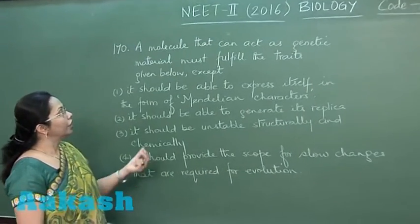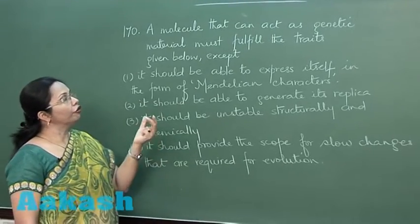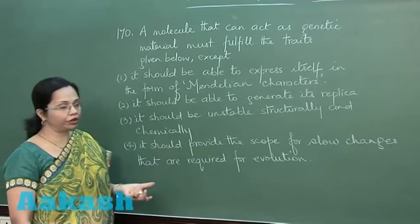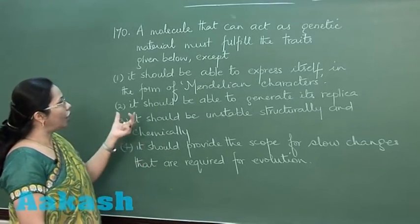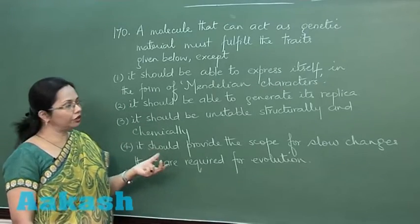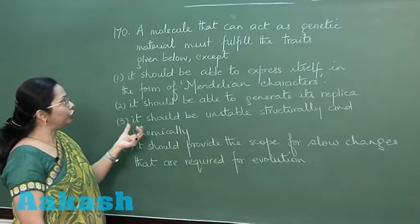Question 170: Any molecule that can act as genetic material must have certain properties, except - now out of these four, it should be able to express itself in the form of Mendelian characters. That's right, it should be able